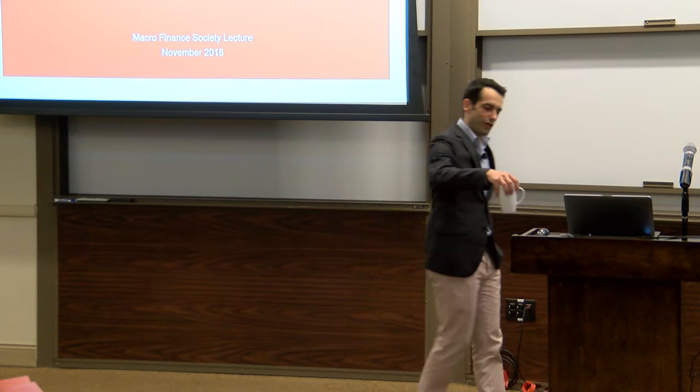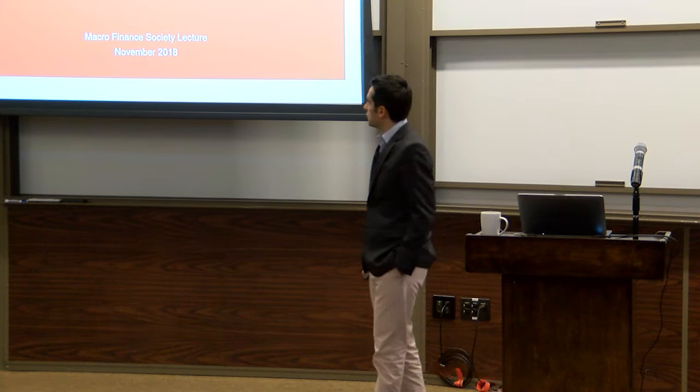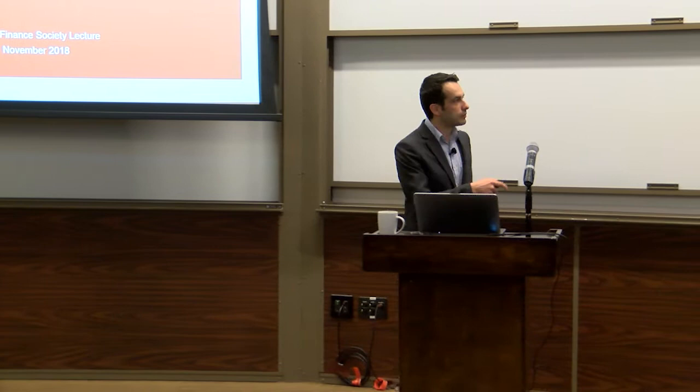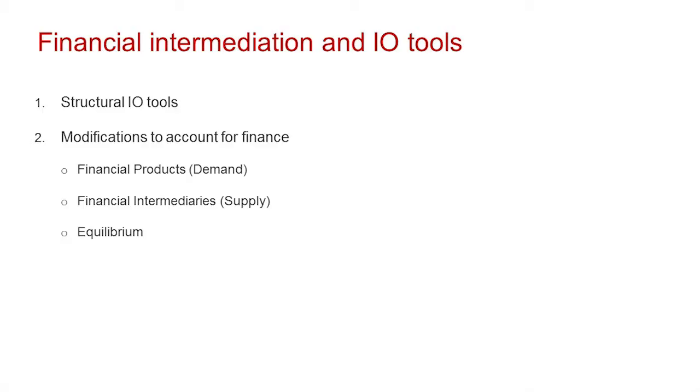Thanks for the introduction, Andres. There are two ways to think about what I'm going to cover in the next hour and twenty minutes. One way is I'm going to talk about quantitative models of banks and shadow banks. Another way is that I'm going to talk about how to introduce IO tools — modern industrial organization tools — into financial intermediation.